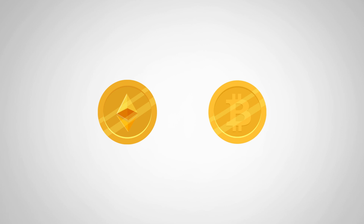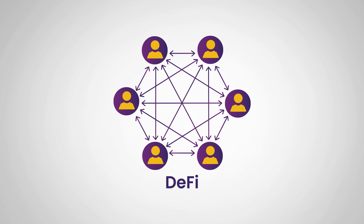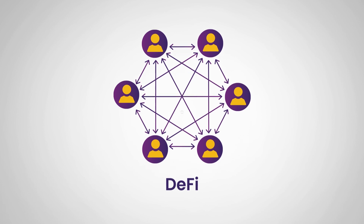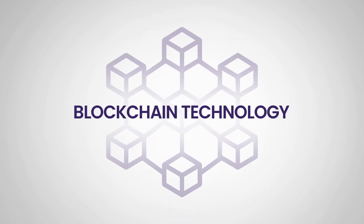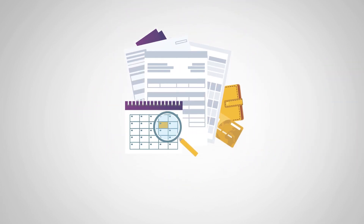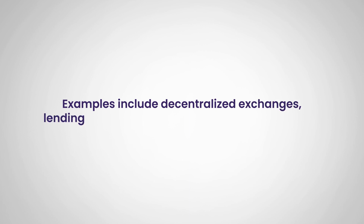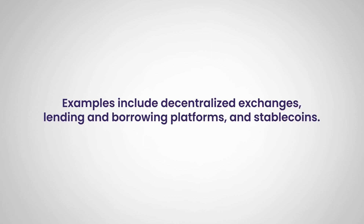Some examples include Bitcoin, Ethereum, Ripple, and others. Next up we've got decentralized finance, or DeFi. Decentralized finance refers to the use of blockchain technology to provide financial services without the need for intermediaries. Examples include decentralized exchanges, lending and borrowing platforms, and stablecoins.